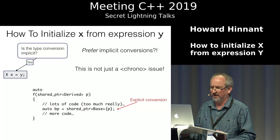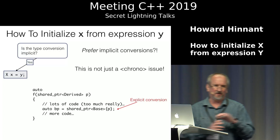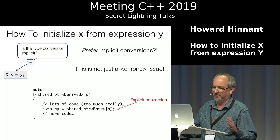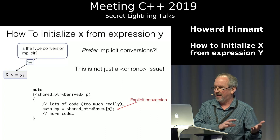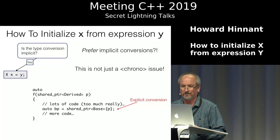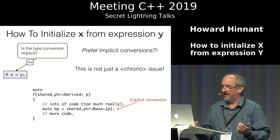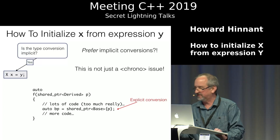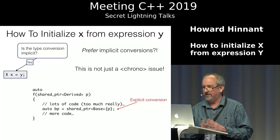This isn't just a chrono issue. Here's another example: a function that takes a shared pointer to derived — a big function. In the middle of it, I'm converting my shared pointer to derived into a shared pointer to base using explicit conversion syntax — not following my advice. The problem is that sometimes you refactor code. One refactoring question is: does this function really need to own this shared pointer, to have partial ownership of this pointer?